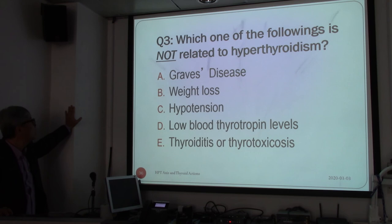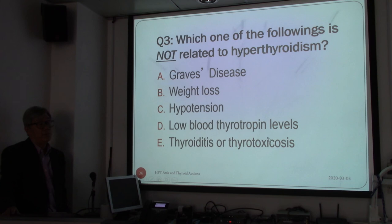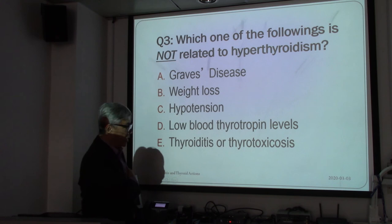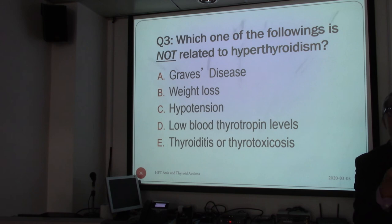The last question: which of the following is not related to hyperthyroidism? The options are Graves' disease, weight loss, hypotension, low blood pressure, and thyrotoxicosis. The answer is C — hypotension — because hypertension is usually associated with hyperthyroidism, not hypotension. I hope you enjoyed all these videos in molecular endocrinology. This concludes thyroid hormone and its action. Bye-bye.